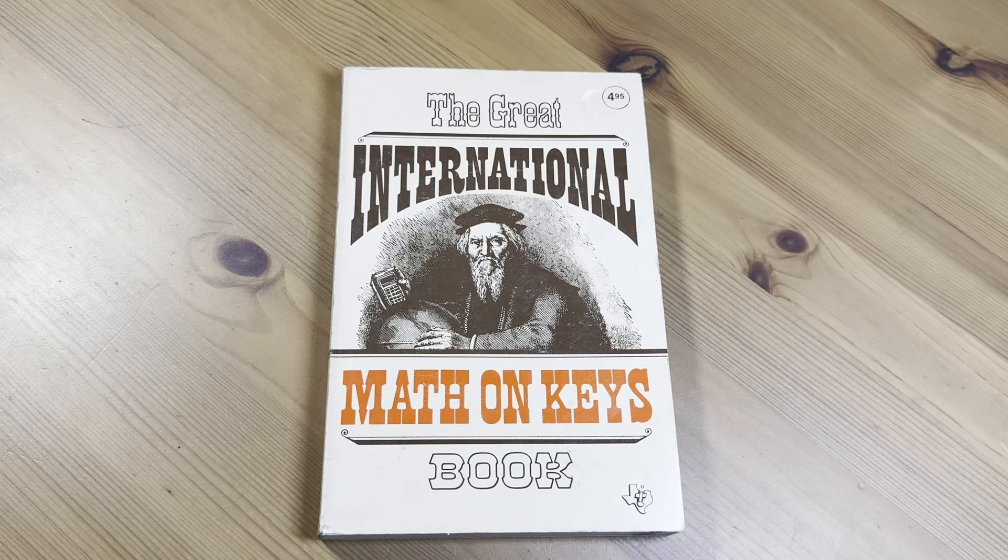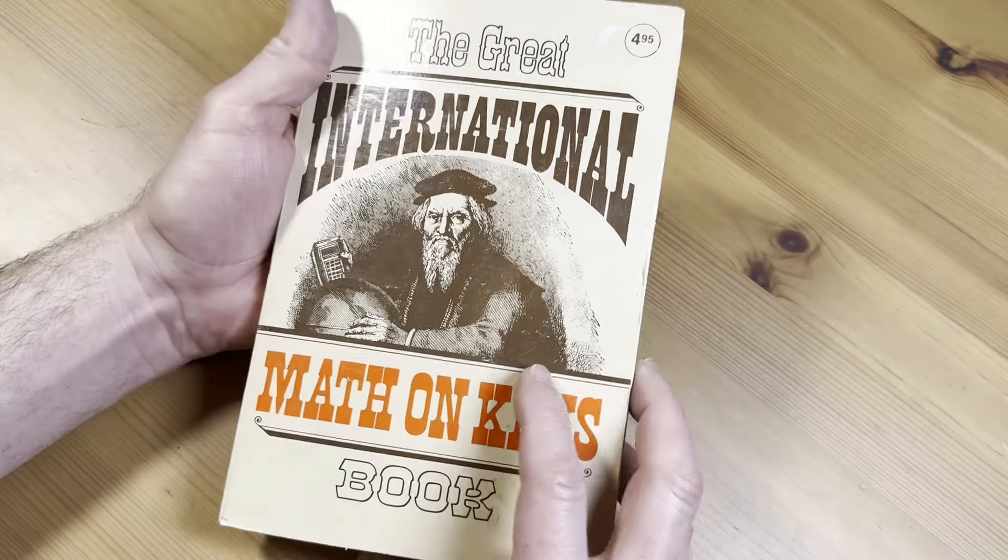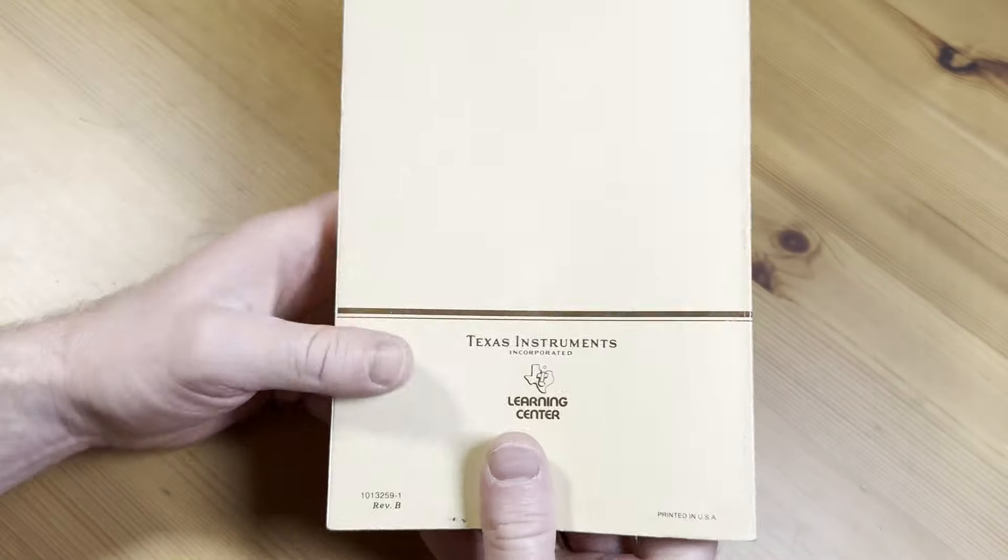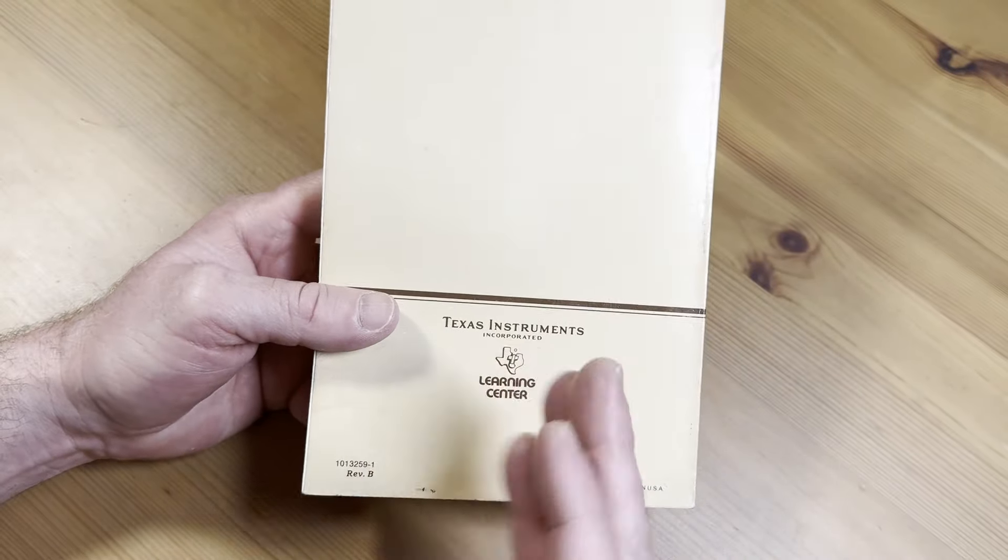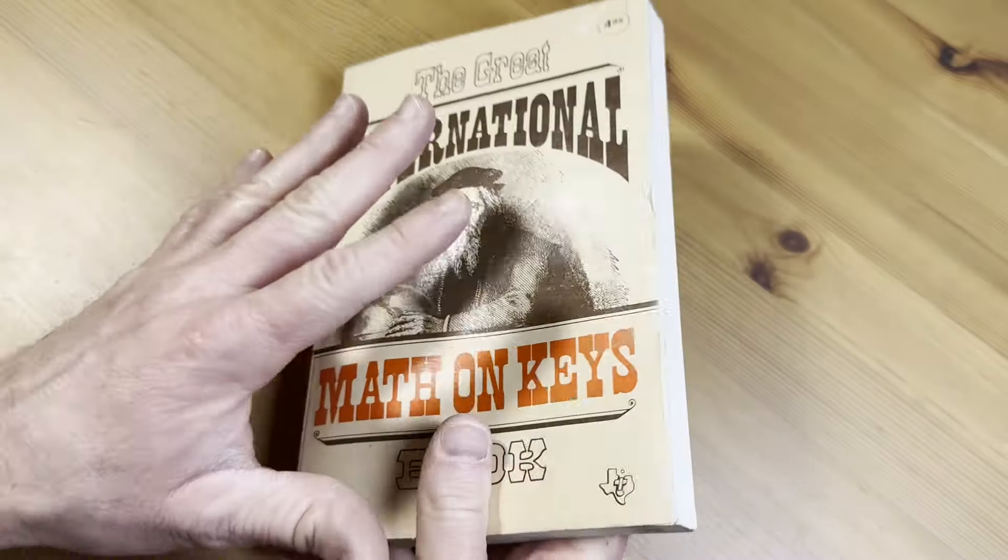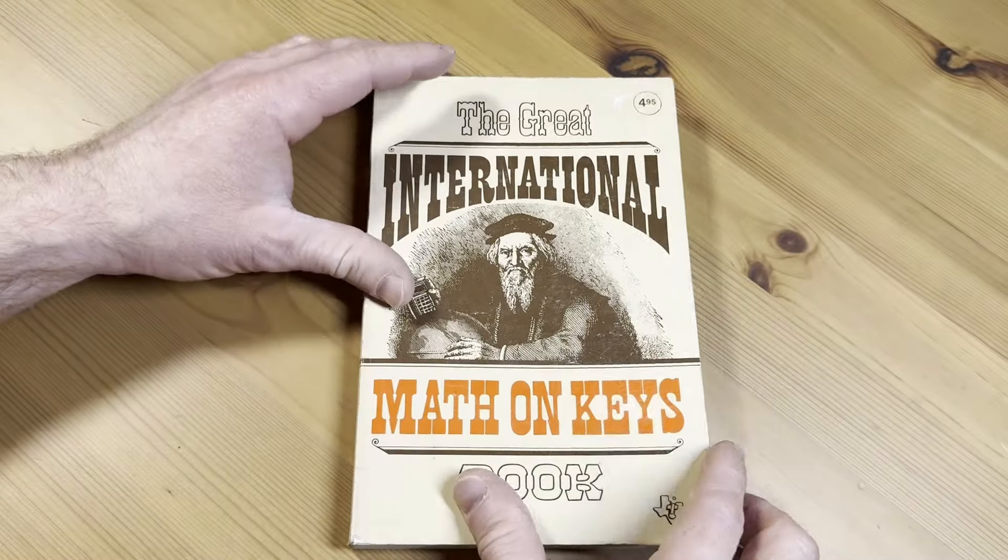Hi, everyone. In this video, I want to show you a book. It's called The Great International Math on Keys Book. This is an older book published by Texas Instruments, the company. I'm pretty sure they are the ones that created this book.